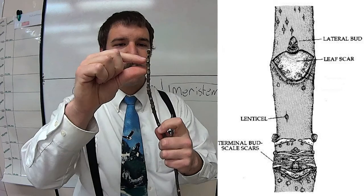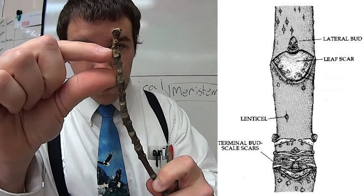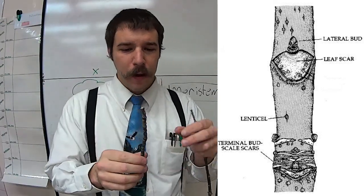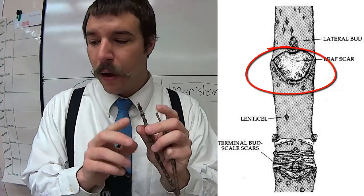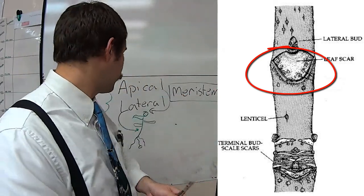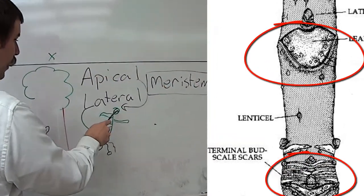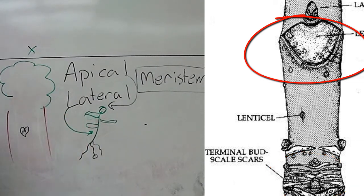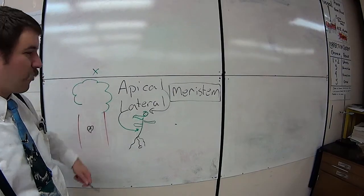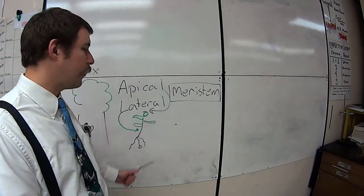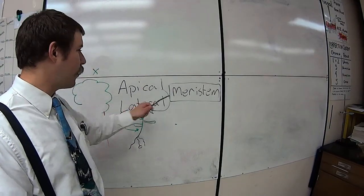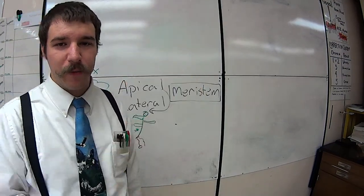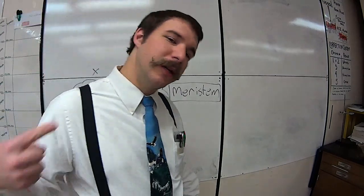The area from scar to scar represents one year of growth — that's how far the tree grew apically, vertically, in one year. You can also see lateral scars representing where the side leaves were attached. A vertical scar goes all the way around, and then there are scars on the sides where leaves stuck out on the twigs to make that nice brushy foliage. To count vertical growth, count the apical meristem scars. To count lateral growth, count the lateral meristem scars. That's it.